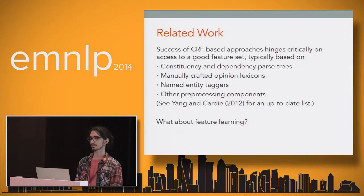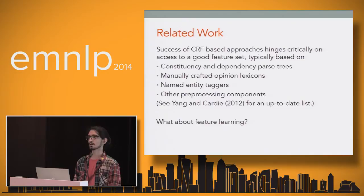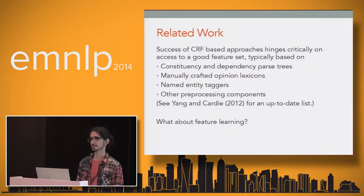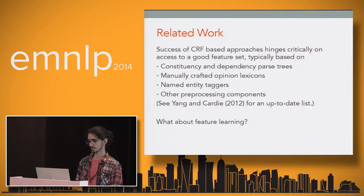The issue with all of these previous approaches is that their performance critically depends on having access to a good feature set — typically coming from dependency or constituency parse trees, manually curated opinion or subjectivity lexicons, named entity taggers, part-of-speech taggers, and other pre-processing components. So in the end it all comes down to good feature design and engineering.